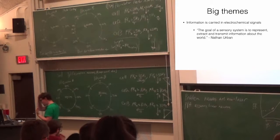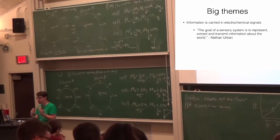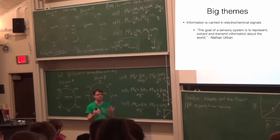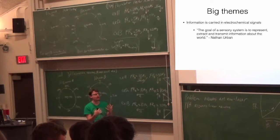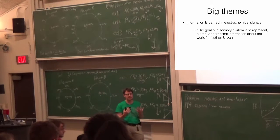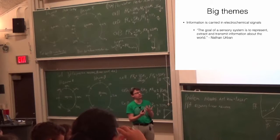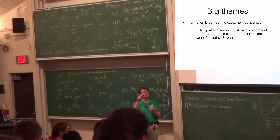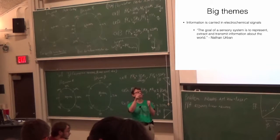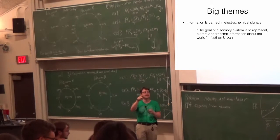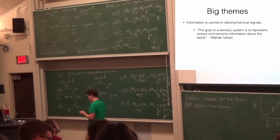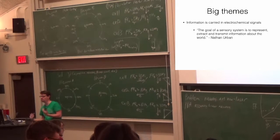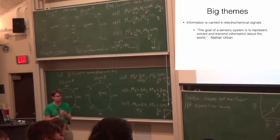In Unit 1, especially, we talked about how electrochemical signals in neurons communicate information. This actually relates back to some of the stuff that came up in Unit 4 when we were talking about sensory systems and the way that action potentials and synaptic communication represent information — how neurons convert the external world into action potentials and transmit that information about the world into the brain, ultimately resulting in motor outputs.